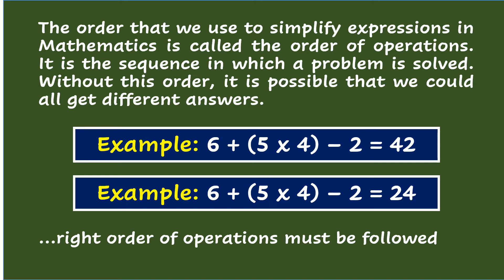Just take a look at these two examples. In the first example, following the order of the given numbers, 6 plus 5 equals 11, times 4 equals 44, minus 2 equals 42.